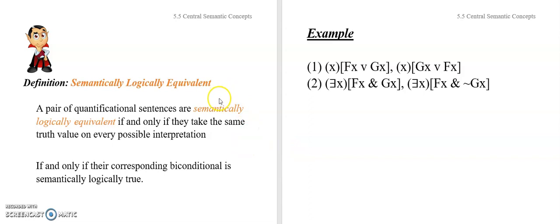Let's move on to another important central semantic concept: semantic logical equivalence. This mirrors our work from chapter two. Recall there we said a proposition was logically equivalent to another if and only if they took the same truth value on every row of their truth table — or equivalently, if and only if their corresponding biconditional was a tautology or was logically true.